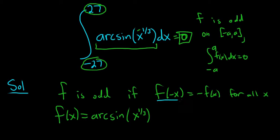So we'll start by plugging in negative x. So f of negative x - you replace all your x's with negative x. So this is arc sine, parentheses and then parentheses negative x to the one-third like that.